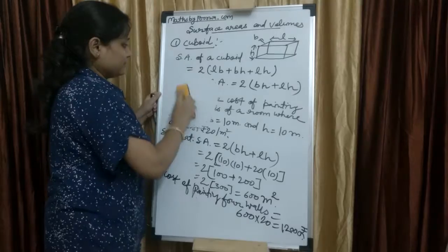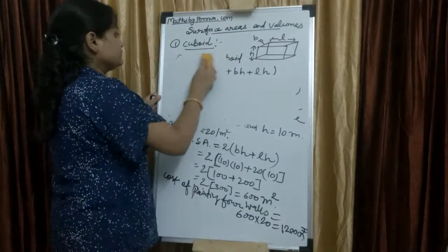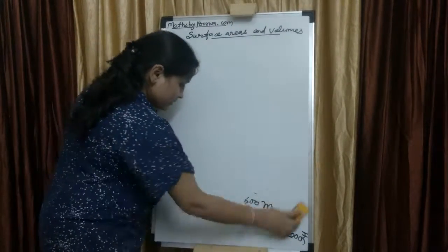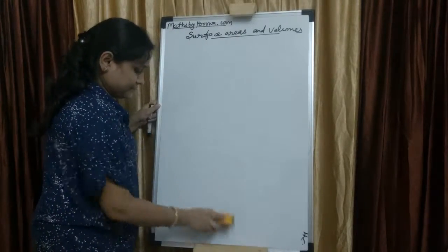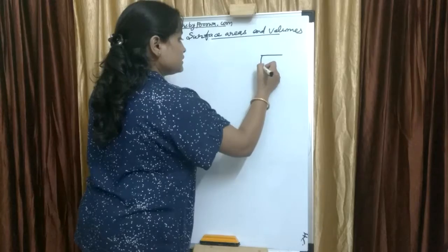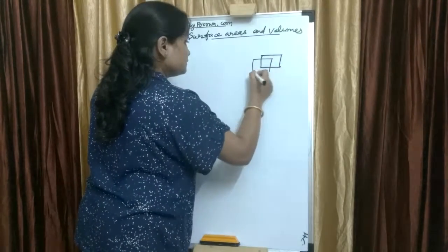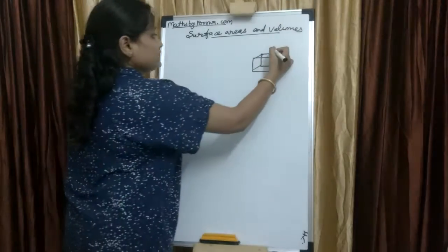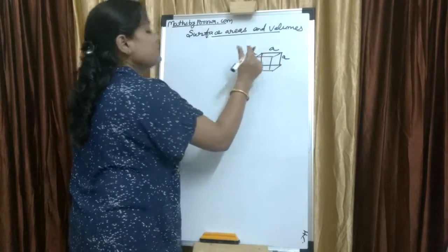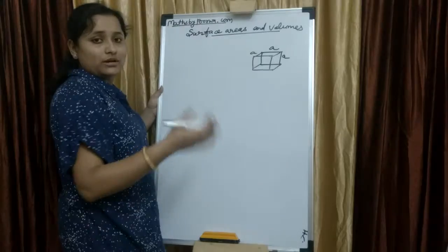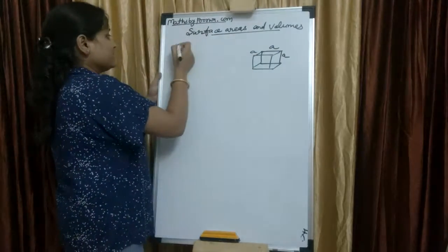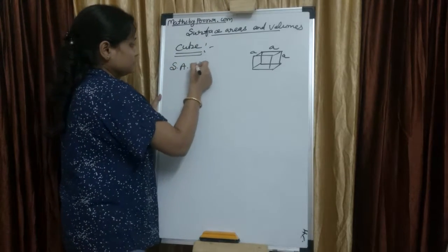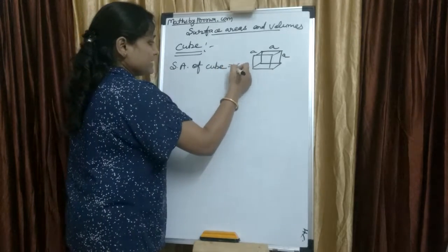Now I will teach you the surface area of a cube. A cube is the 3D form of a square. In a cube, all sides are equal, so we assume each side as 'a'. Surface area of a cube equals 6a².